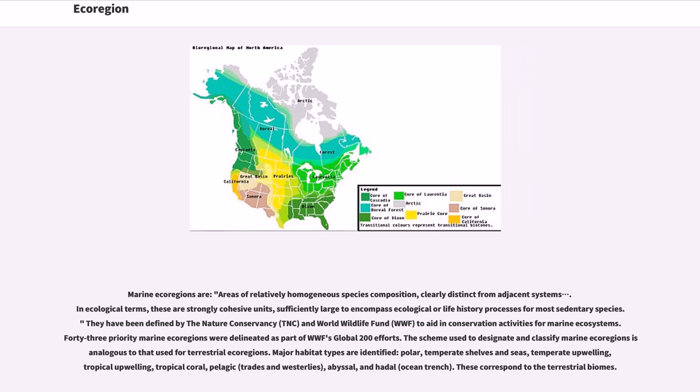Marine ecoregions are areas of relatively homogeneous species composition, clearly distinct from adjacent systems. In ecological terms, these are strongly cohesive units, sufficiently large to encompass ecological or life history processes for most sedentary species. They have been defined by the Nature Conservancy and World Wildlife Fund to aid in conservation activities for marine ecosystems. 43 priority marine ecoregions were delineated as part of WWF's Global 200 efforts.